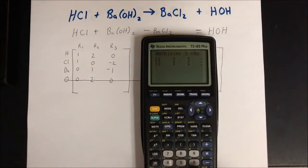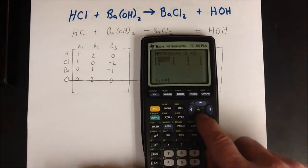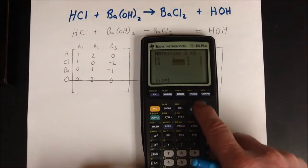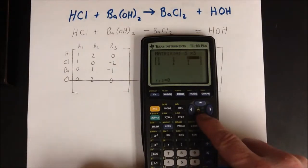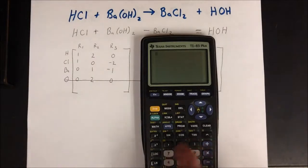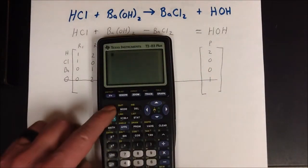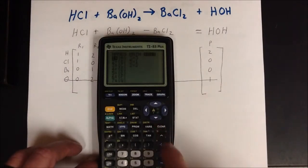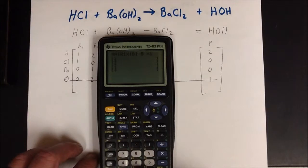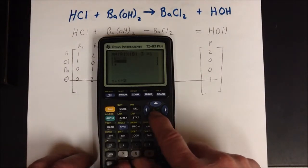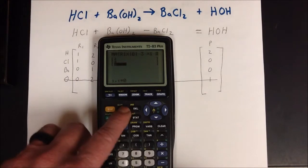I enter the 3×3 matrix A. First column: 1, 1, 0. Second column: 2, 0, 1. Third column: 0, negative 2, negative 1. Then I quit that matrix. Now I jump over to matrix B — hit 2nd, x⁻¹ to bring up the matrix menu, arrow over to Edit B. This one is a 3×1 matrix. My values are 2, 0, and 0. Then I exit out.